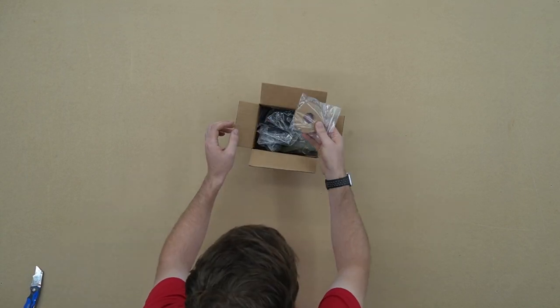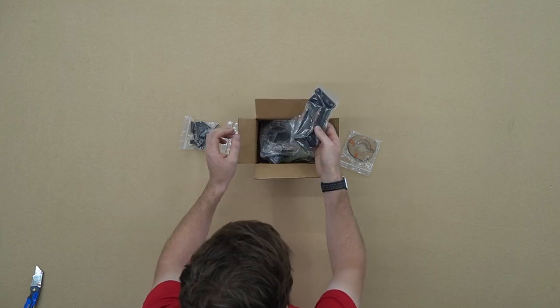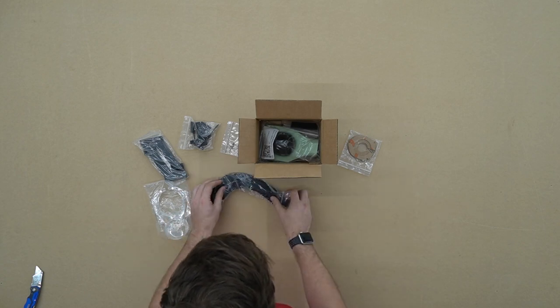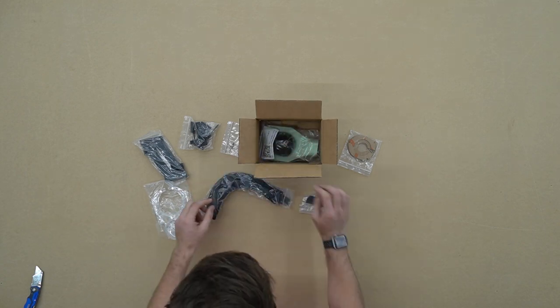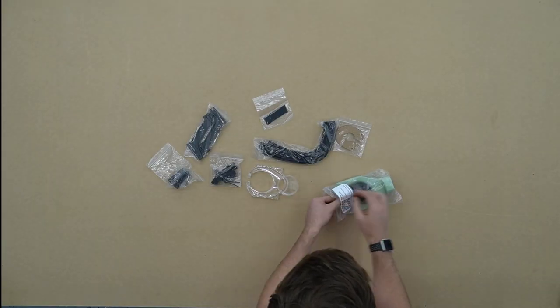When we open up our box we will find our Sucket Dust Boot router shields, our mounting hardware, our magnetic mounting blocks, the Sucket Dust Boot, three Dust Boot brushes, another set of magnetic mounting blocks, and the Pawn CNC Dust Boot.